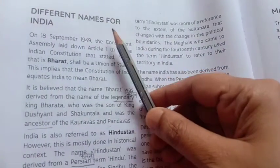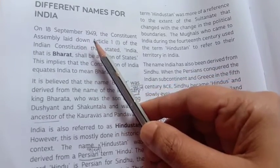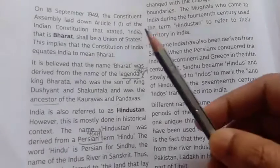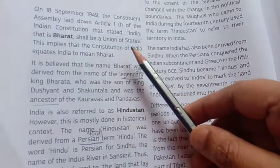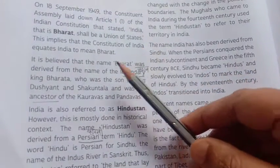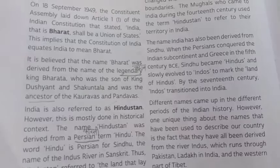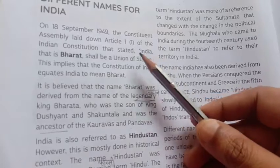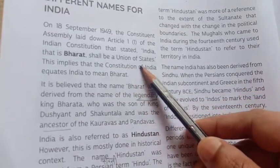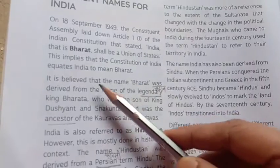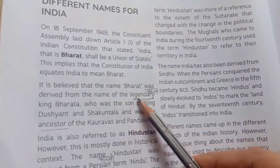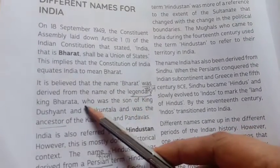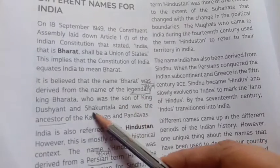Our next topic is different names for India. On 18th September 1949, the Constituent Assembly laid down Article 1 of the Indian Constitution, which states: 'India, that is Bharat, shall be a union of states.' This implies that the Constitution of India equates India to mean Bharat. It is believed that the name Bharat was derived from the name of the legendary King Bharat.